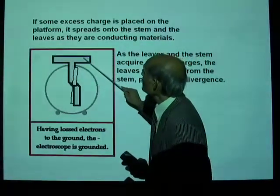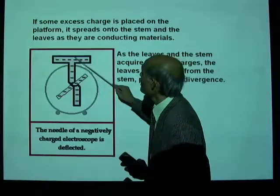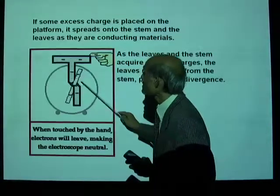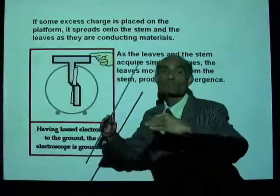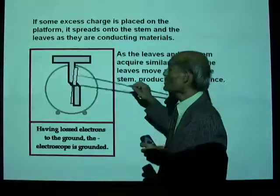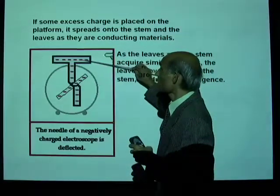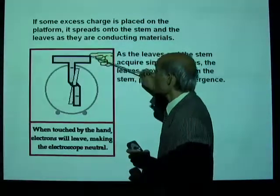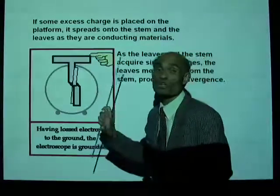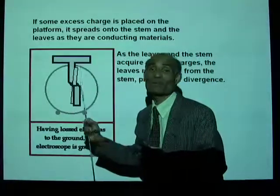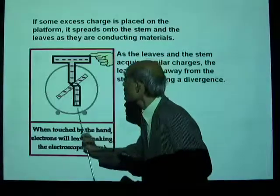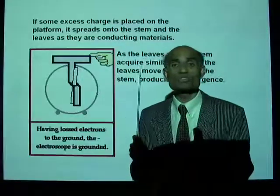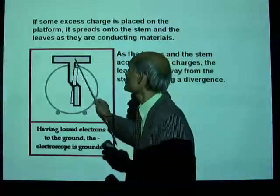Here is an animation of the electroscope. When some excess charge is placed on the platform, the stem and the leaves both have the same excess charge, and therefore the leaves move away. When somebody comes and touches the electroscope, all the excess charges simply disappear — this is called grounding. The leaves diverge, and the extent of divergence is a measure of the amount of charge.